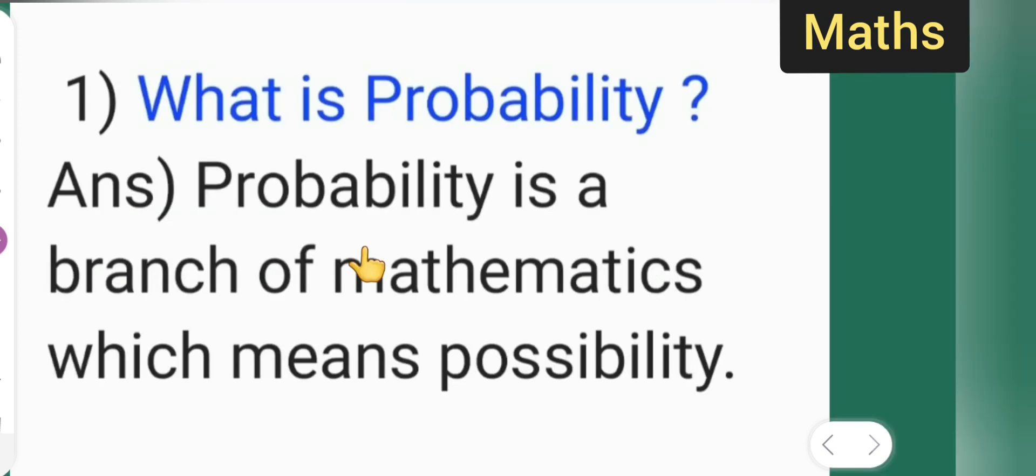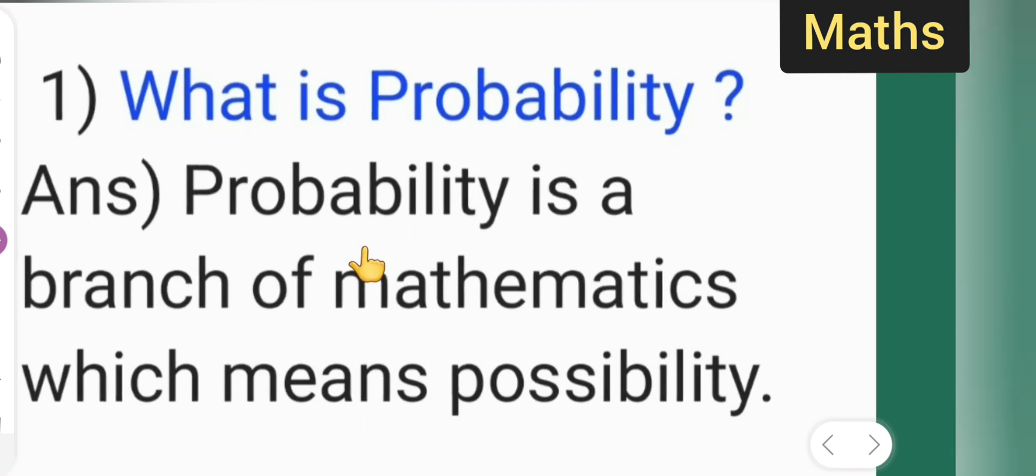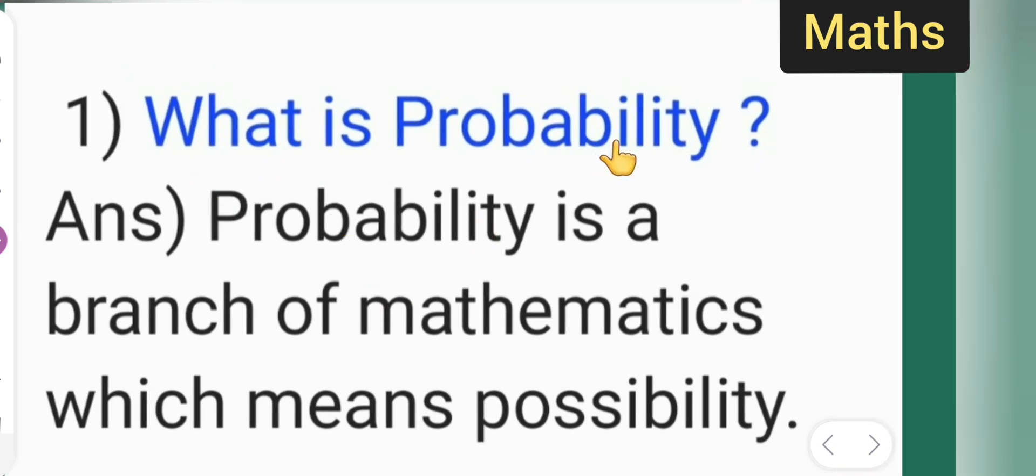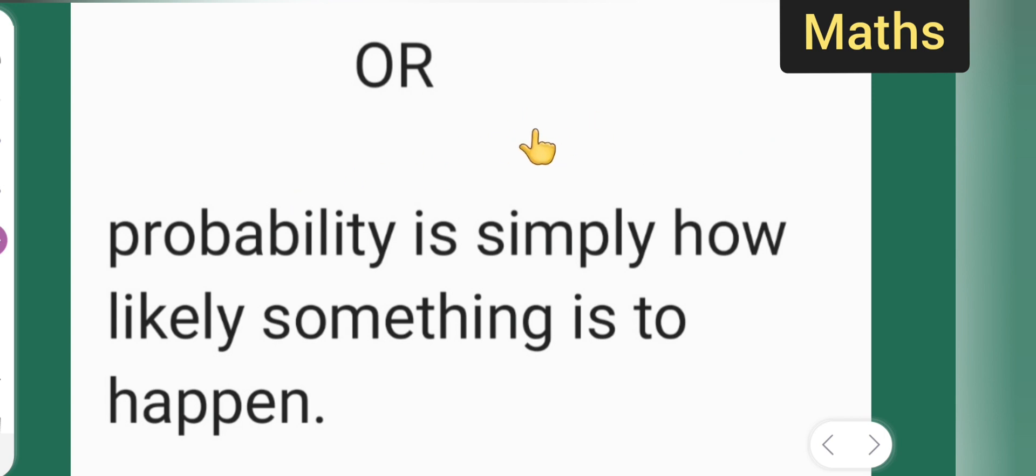Let us start with the definition of probability. What is probability? Probability is a branch of mathematics which means possibility, or you can say probability is simply how likely something is to happen.